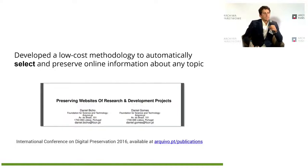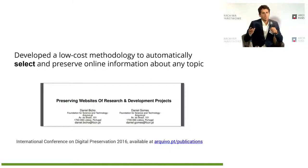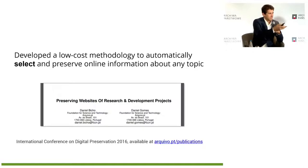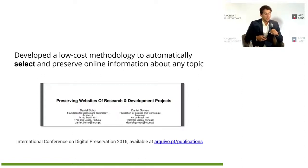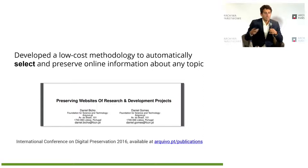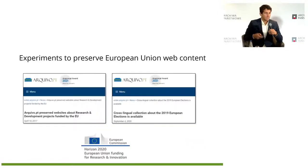We developed a low-cost methodology to automatically select and preserve online information about any topic. The motivation was to preserve the websites of research and development projects — information not preserved by the publications office, specifically the URLs of project websites that typically disappear when a project ends. There are thousands of them, so it's really hard to find them by hand. We developed this methodology and then expanded it to find information about any other topics.